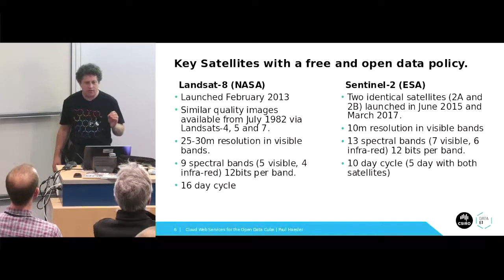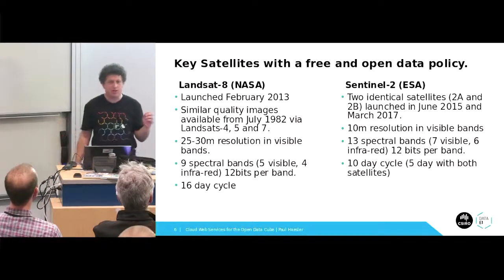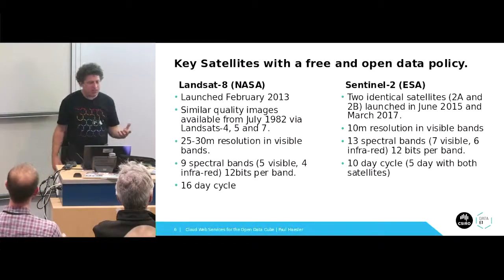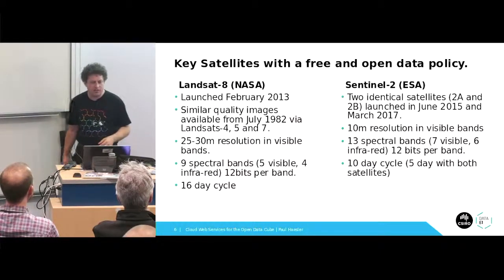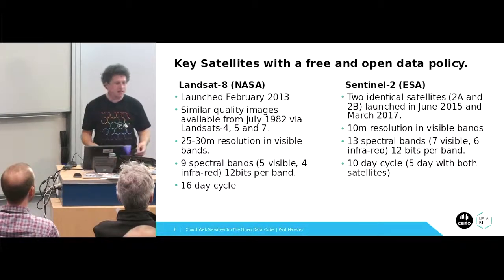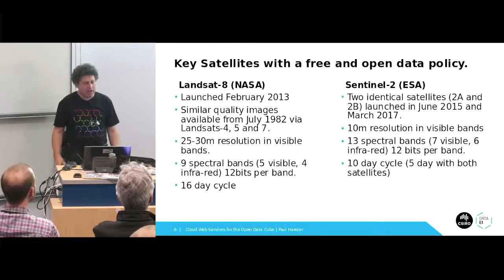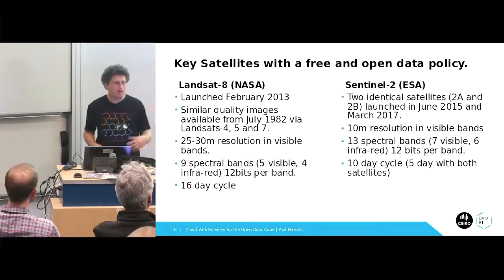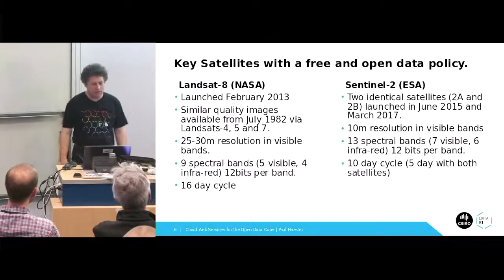The most interesting satellites to us at the moment are Sentinel-2 and Landsat-8 — not because they're the biggest or most fancy, but because they have the best free and open data policy. Sentinel-2 is far superior: 10-metre resolution versus about 25–30 metres for Landsat, 13 spectral bands compared to 9, and it covers the Earth in about 10 days — or five days since there are two Sentinel-2s. But the advantage of Landsat is that we have a program going right back to the 1980s with high-quality images on the same orbits, enabling great longitudinal comparisons.